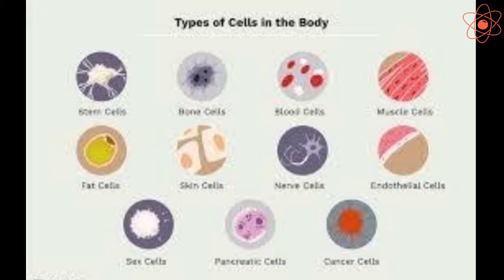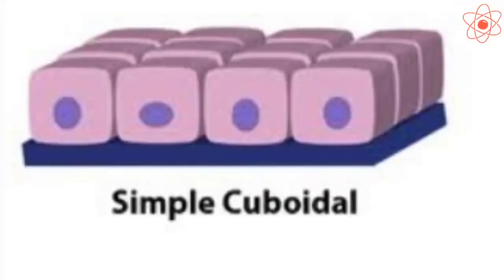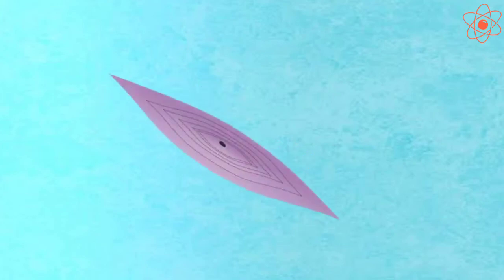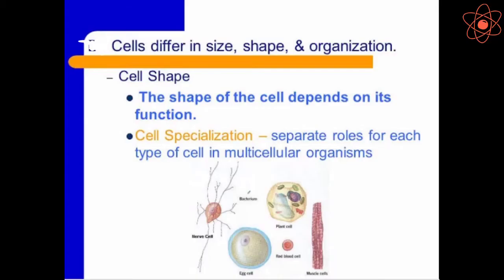Cells show great variety in their shapes such as spherical, cuboidal, columnar, elongated or spindle shaped. The shape of the cell depends on the function it performs.